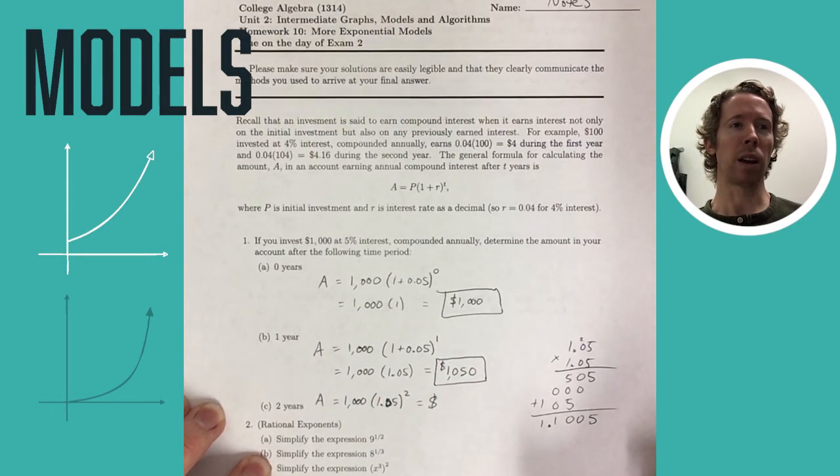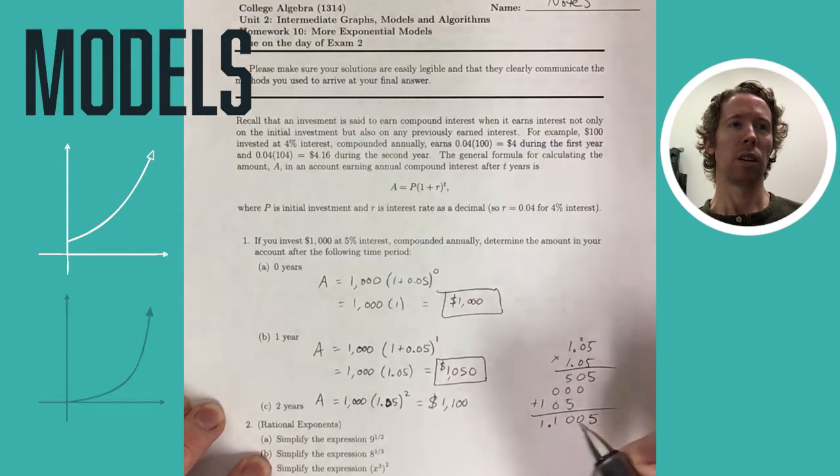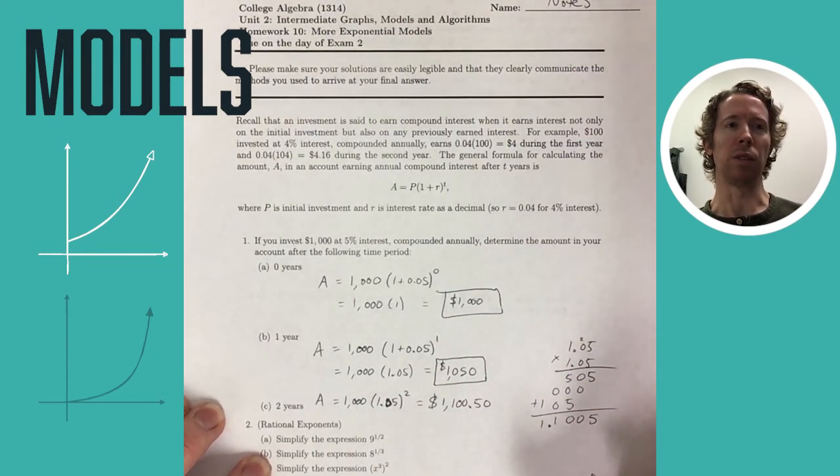Then you multiply that by 1,000, that moves the decimal three places back over to the right. So you should get $1,102.50.